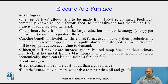Advantages: the use of an electric arc furnace allows steel to be made from 100% scrap metal feedstock, commonly known as cold ferrous feed. Scrap is a regulated feed material, providing a large reduction in specific energy. Another benefit is flexibility — electric arc furnaces can be rapidly started and stopped, allowing steel mills to vary production according to demand. Disadvantages: electric furnaces have a higher cost to run than gas furnaces and may be more expensive to repair than oil and gas furnaces.